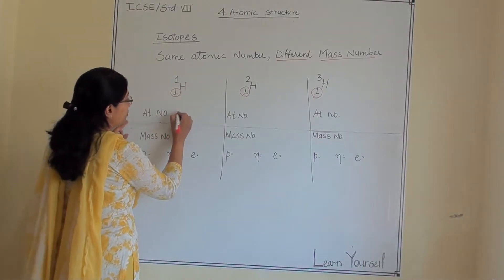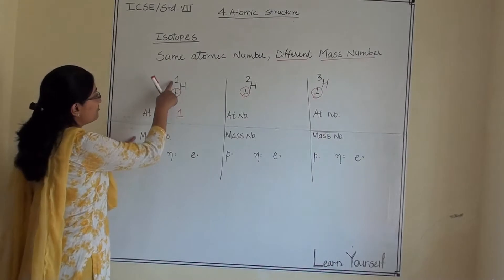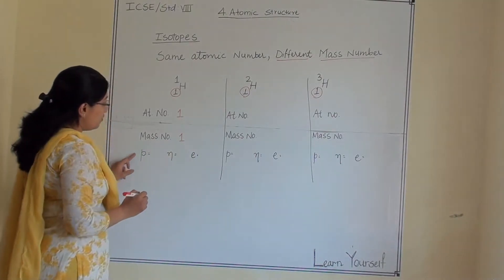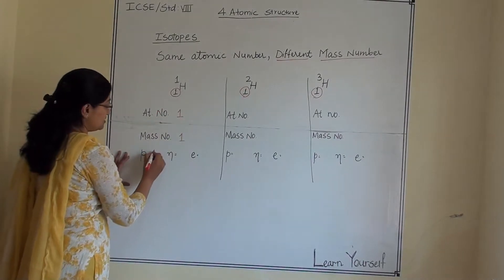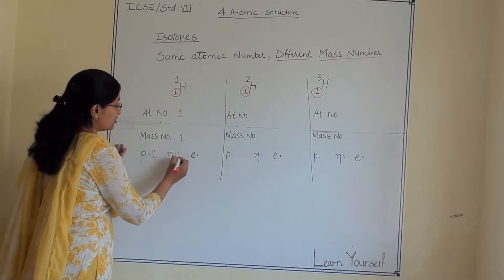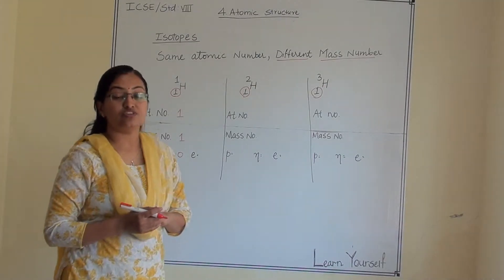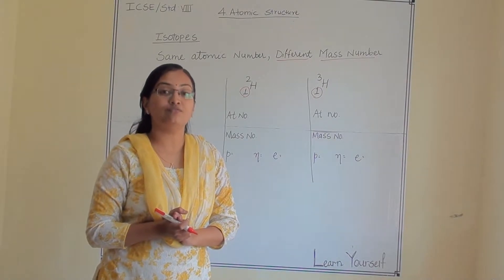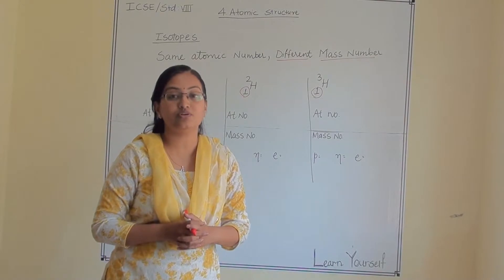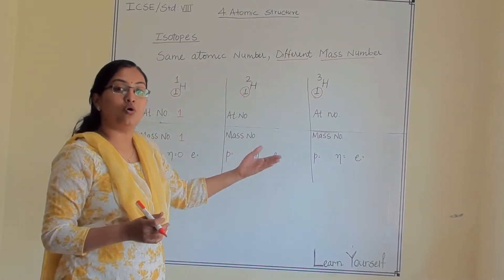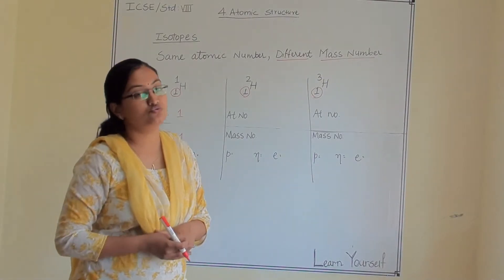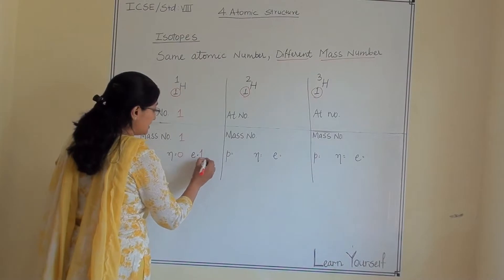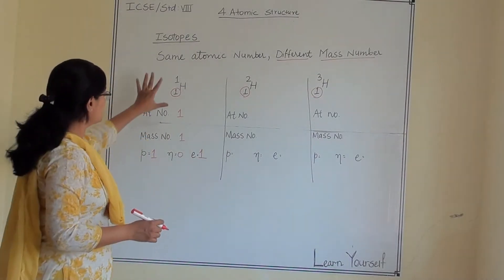The atomic number of protium is one, and its mass number is also one. So the proton count is one, because its atomic number is one. The neutron count in protium is zero — hydrogen is the only element in the whole periodic table that does not have a neutron. Since the proton count is one, the electron count is also one.